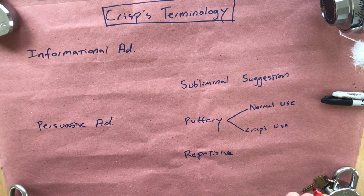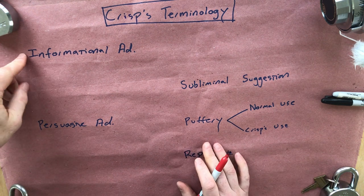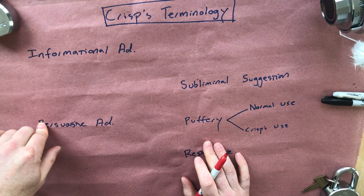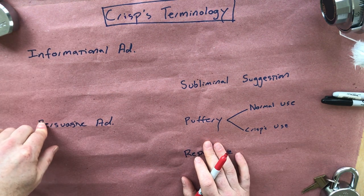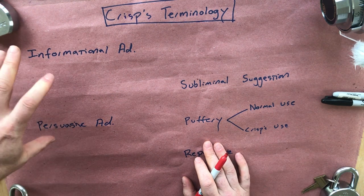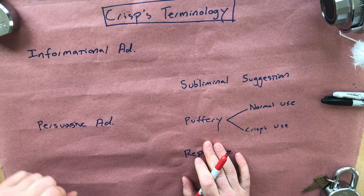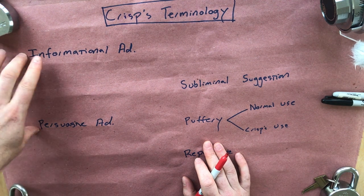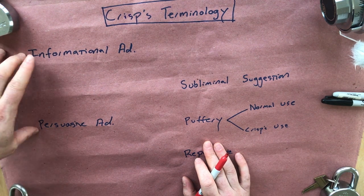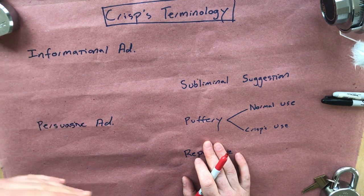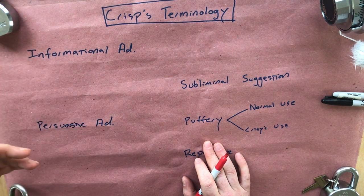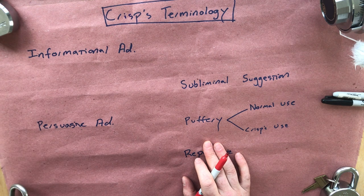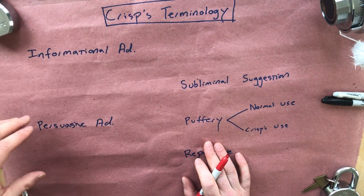As you hopefully know at this point, there are two main kinds of advertising that Crisp is interested in. This is, as far as I can tell, kind of an old distinction in the marketing literature, but not actually used anymore. But that's okay — the concepts are what matter.